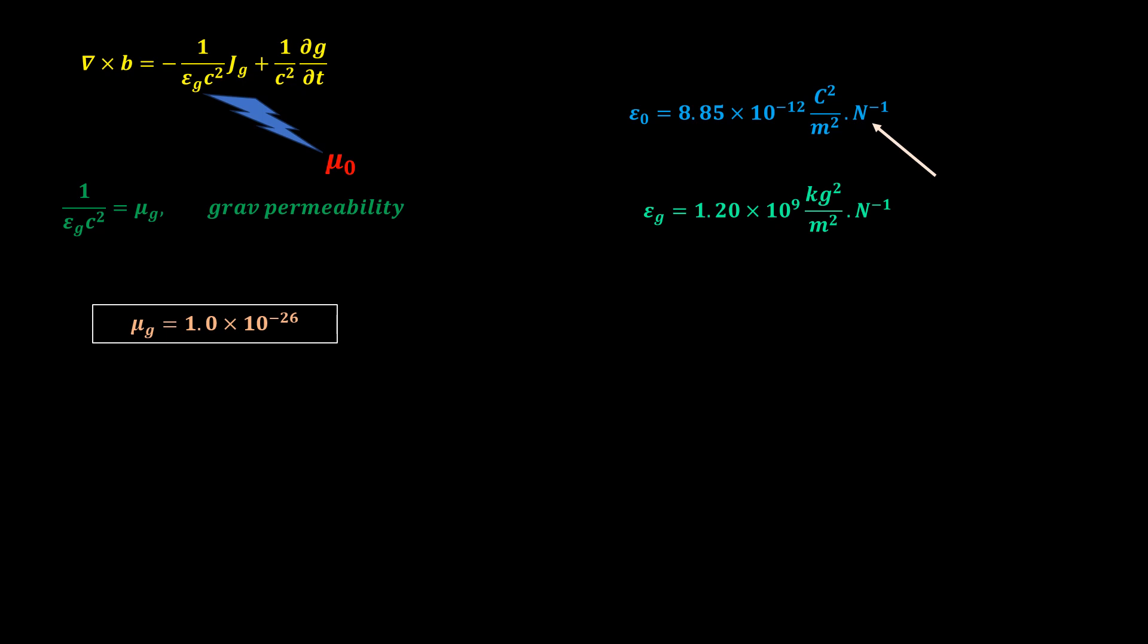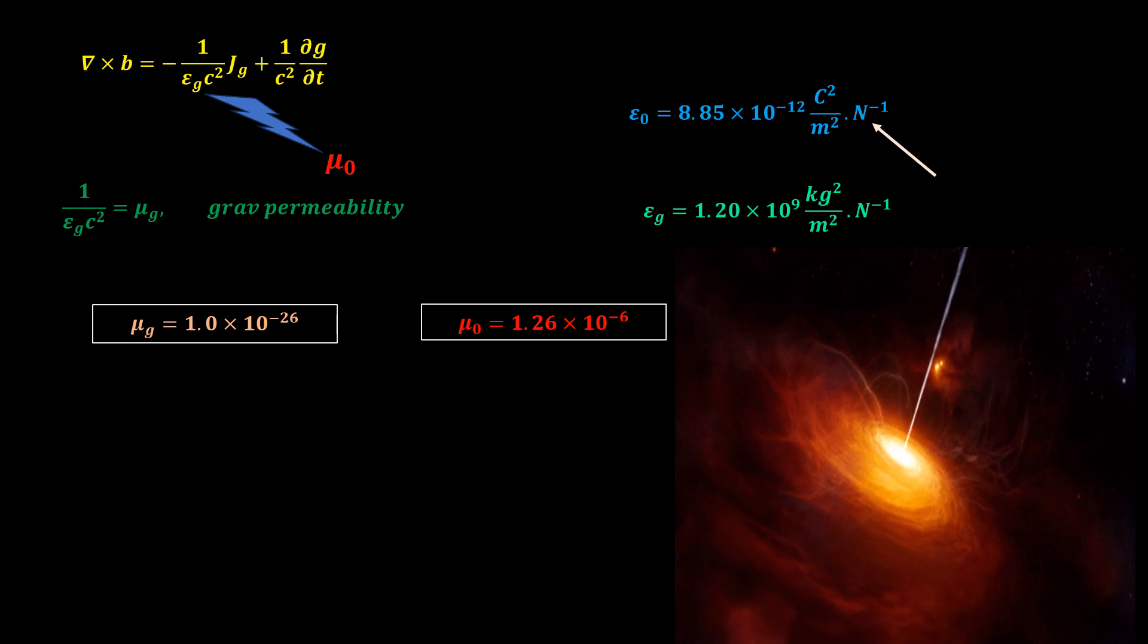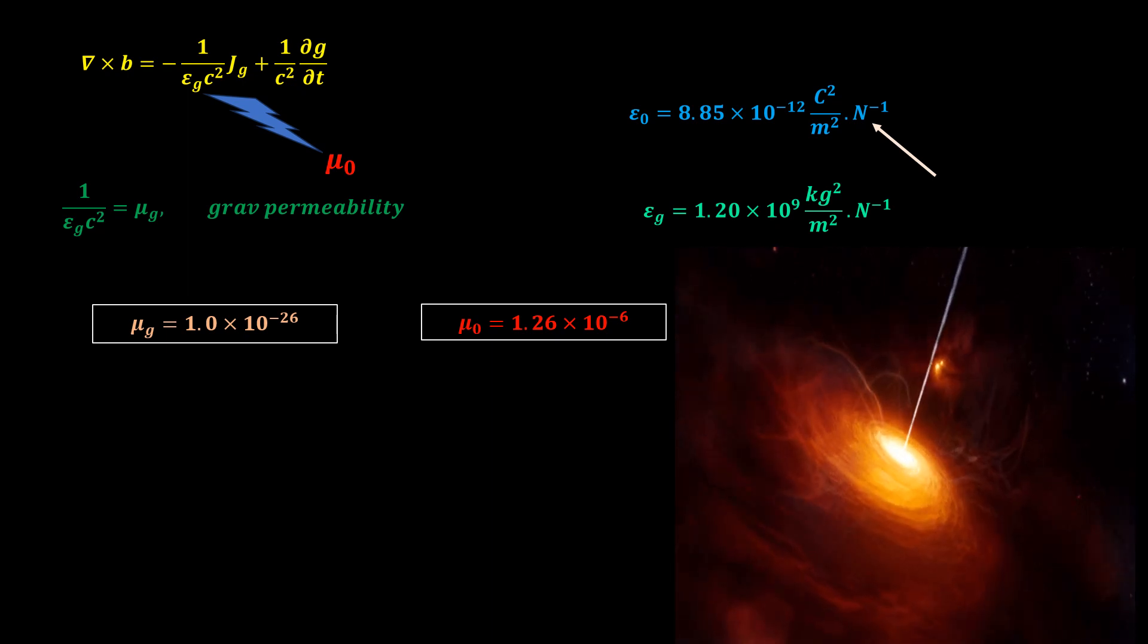On the other hand, the gravitomagnetic permeability is way, way smaller than the magnetic permeability. This means it is extremely easy to shield these gravitomagnetic fields. So they only probably exist very close to the mass producing them, or its other sources. Therefore, in order to detect gravitomagnetic effects, we need a really powerful source like quasars or really massive black holes.